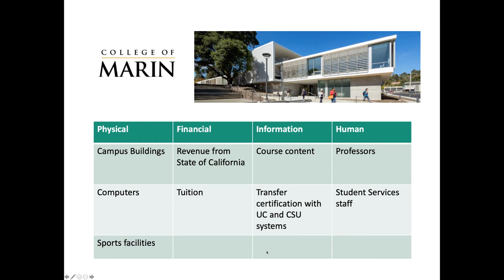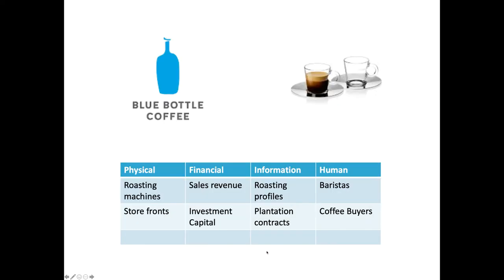College of Marin still has financial resources like revenue from the state of California and from your tuition. It has informational resources like course content and the know-how to present classes that certify for transfer credit when you move on to a UC or Cal State campus. And finally, human resources like the instructor teaching you, as well as other staff and administration — all needed to be successful at College of Marin.